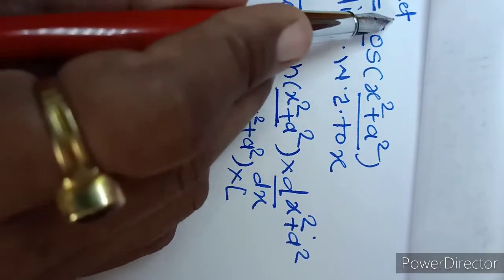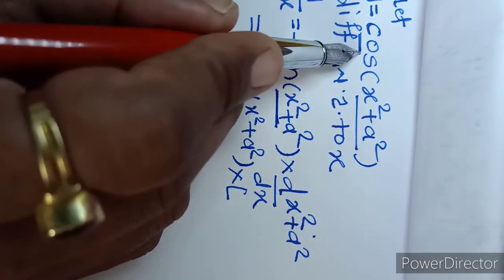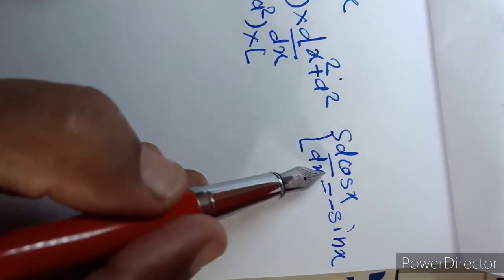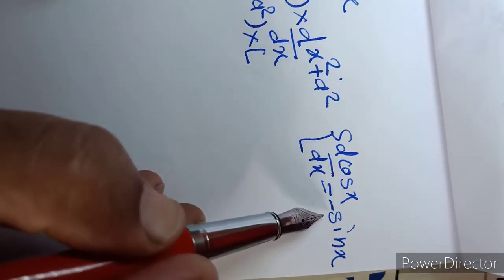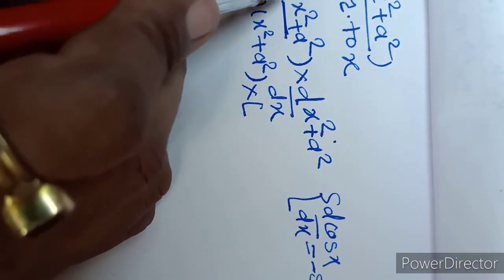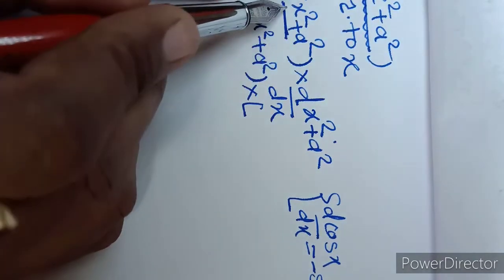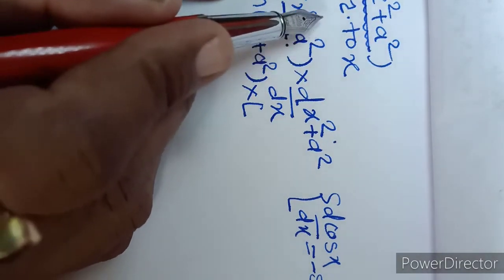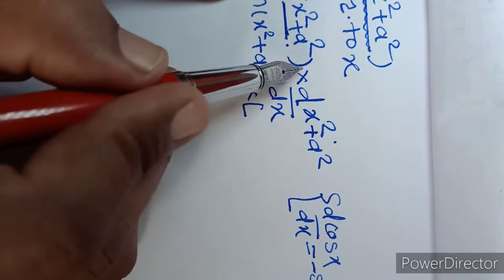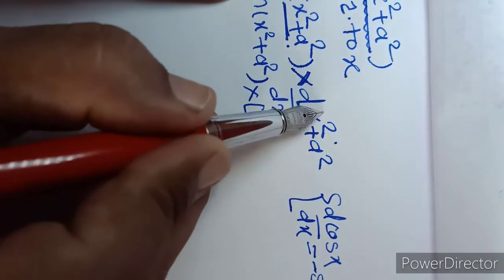Now friends, the outermost function here is cos of something, so we must use the derivative of cos x. We use the cos x formula: the derivative of cos x with respect to x is minus sin x. So we write minus sin of the inner function, which is x² + a².